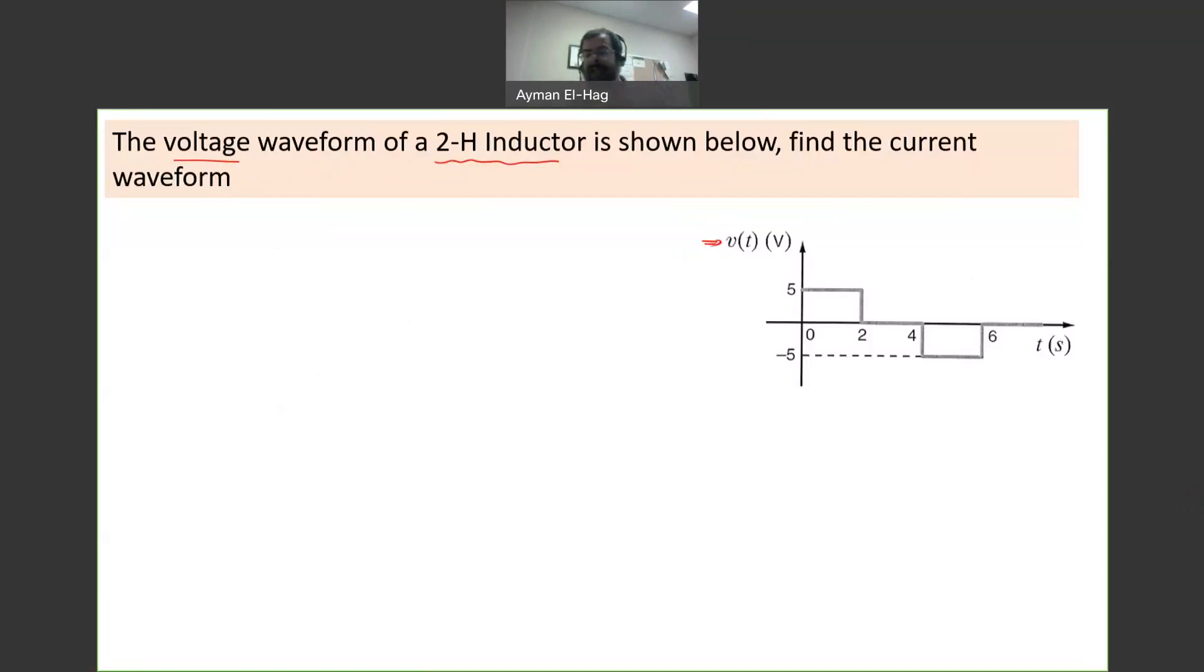For these types of questions, we first identify: is this a derivative question or an integration question? For an inductor, we have two relations. The first, VL equals L diL by dt. The second equation, IL equals 1 over L integration of V dt plus IL of 0, the initial condition.